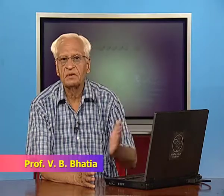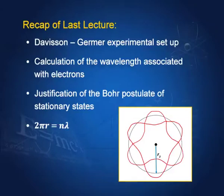In the last lecture, we learnt how the Davisson-Germer experiment was able to verify the de Broglie hypothesis. We also calculated that since the de Broglie hypothesis has been verified, the relation lambda equal to h by p is true. Knowing p, we can find lambda. We calculated in certain situations the de Broglie wavelengths of electrons. We also saw that Bohr's postulate regarding stationary orbits was now justified by the de Broglie relationship.